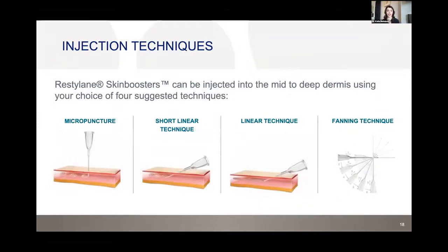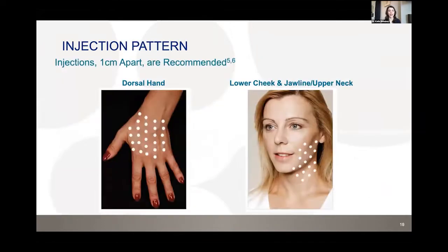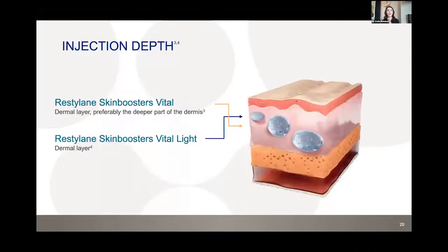Injection techniques include micro-punctures, short linear threads, or fan techniques — often a mix. Injections are spaced approximately one centimeter apart. For areas with etched-in lines, droplets can be placed closer together. The depth targets the deep dermis for Vital and more superficially for Vital Light — product should remain in the dermal layer, not deeper, to maintain its skin quality benefits.